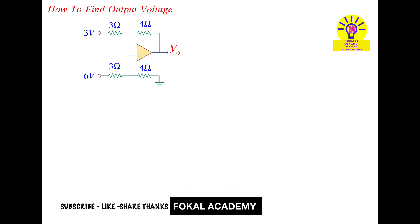Welcome to Fokal Academy. Seeing this problem here, one circuit is given which was made with op-amp. So here two voltage sources are given, then how can you find the output voltage? So what is this circuit? It is a difference amplifier.